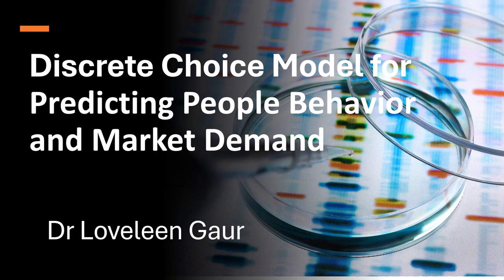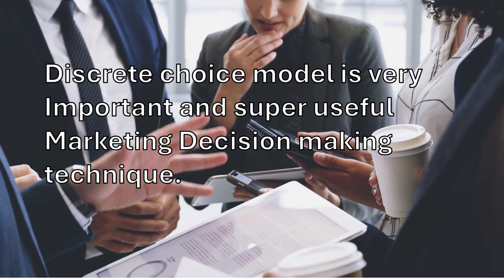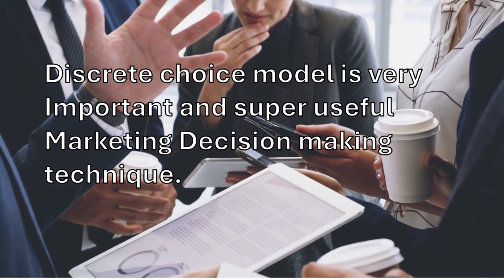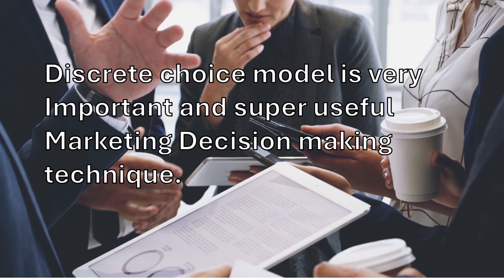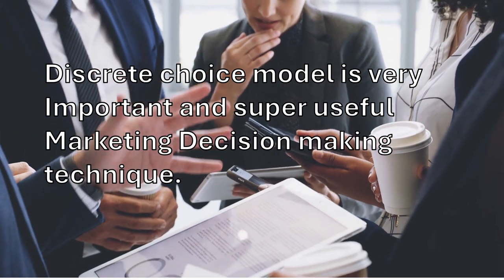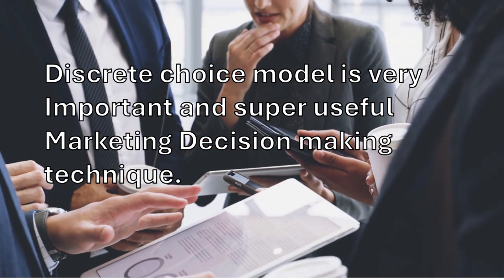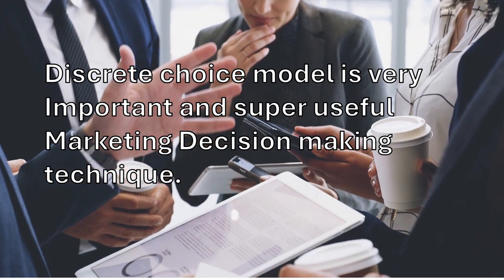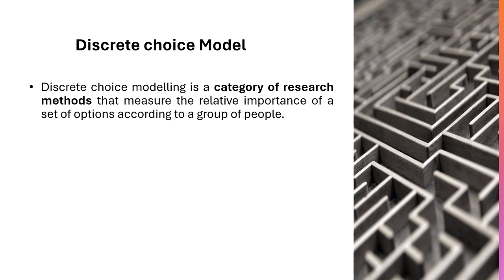This is a discrete choice model for predicting people's behavior and market demand. This model is very important and useful for marketing decision making. Though the application of this model is huge, for this video we are focusing only on marketing. Discrete choice model is the category of research method that will measure the relative importance of a set of options according to a group of people.